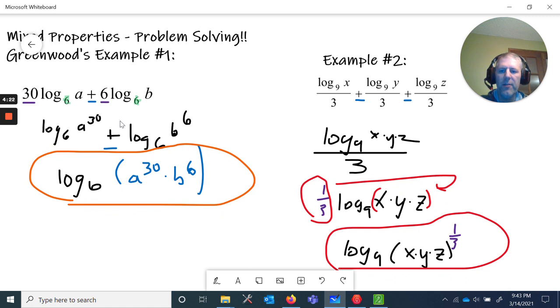In the first example we did the power first, so we raised this to the 30th and this to the sixth because the coefficient goes to the power. Here we did the multiplication product, so we condense the product first and then we move the power from a coefficient of one-third up to the exponent.